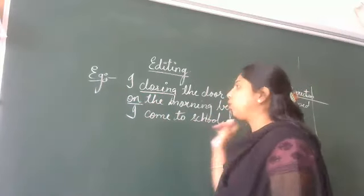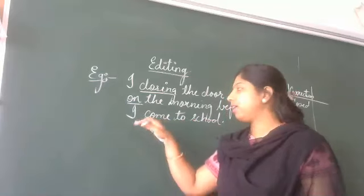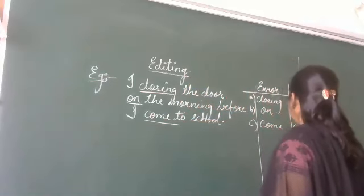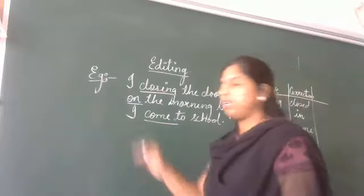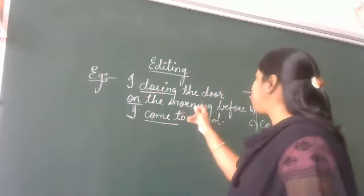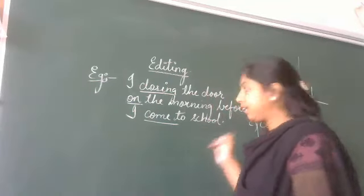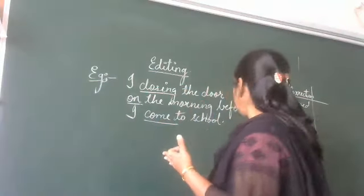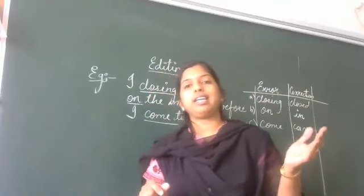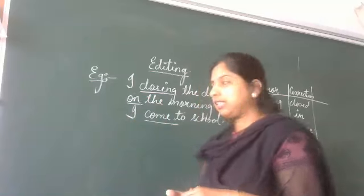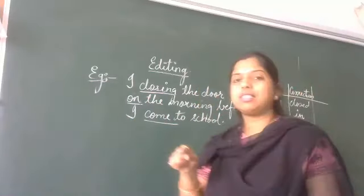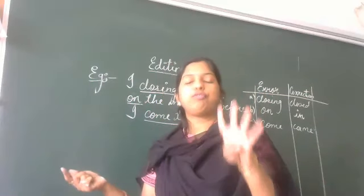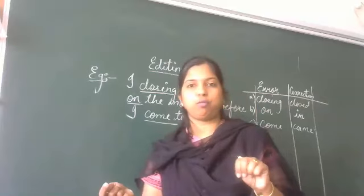So: 'I come to school.' What is the error here? Came — very good. Instead of 'come,' it should be 'came.' Now you can read the entire corrected passage: 'I closed the door in the morning before I came to school.' There were three errors; you found those errors, wrote them in the error column, and wrote the corrected words in the correction column. You will have three to four errors worth three to four marks.